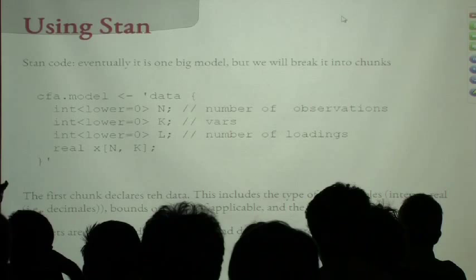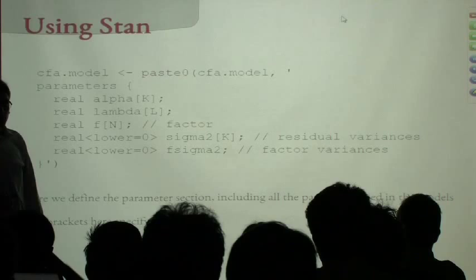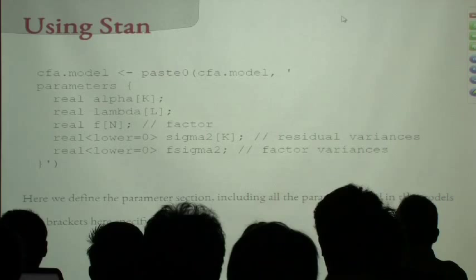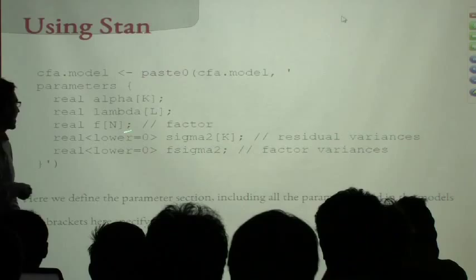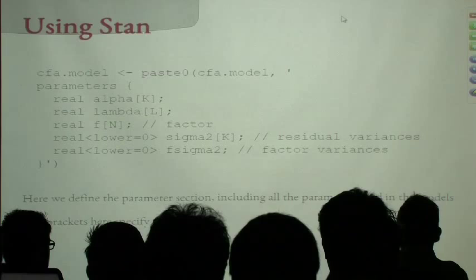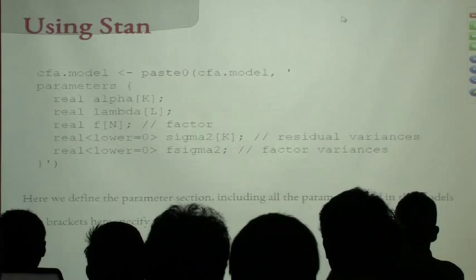To compile and run the model, you use the rstan package, then use a simple syntax asking for 500 iterations on two chains. This takes a couple minutes to compile the C++ code into an executable and start sampling. If you've already compiled once and find poor mixing, you can reuse that compiled object and just ask for more iterations — say 2,500 — and change the number of chains.